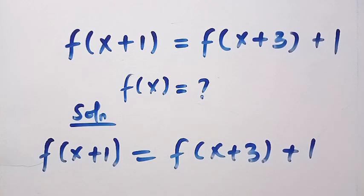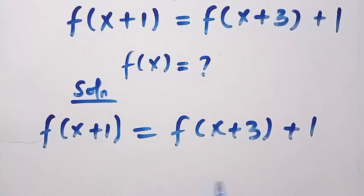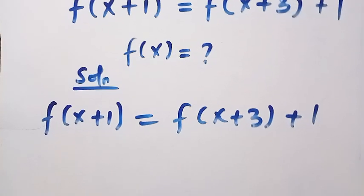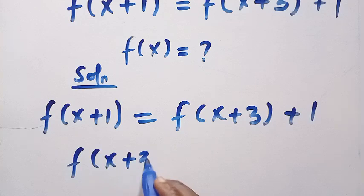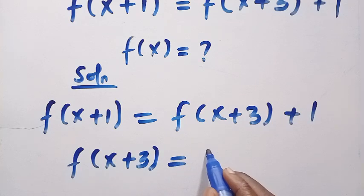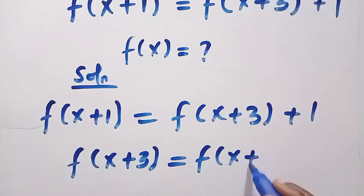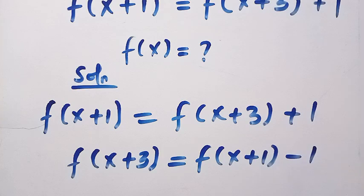By doing the rearrangement, we are going to make f(x+3) to be here. As we have f(x+3) equals f(x+1) minus 1.